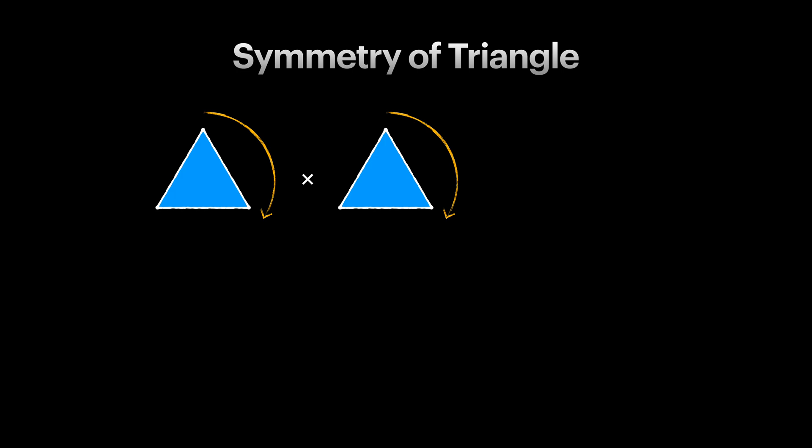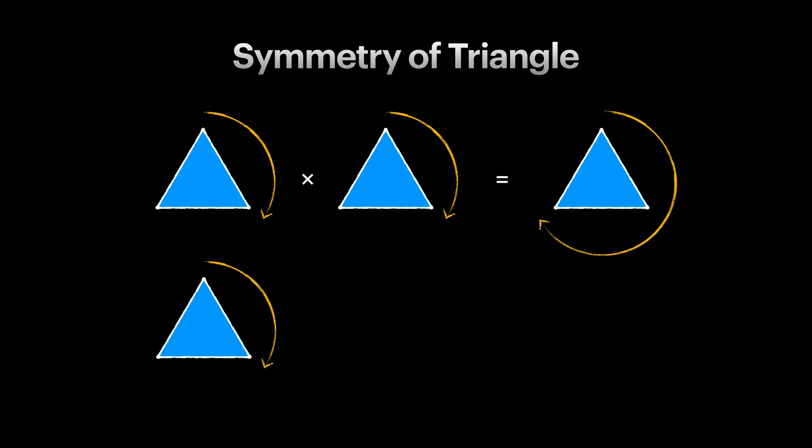For example, by composing 120 degrees rotation twice, we'll effectively get a 240 degrees rotation. What if we first rotate 120 degrees and then flip the triangle from the middle? In that case, if you think about it, it's like we flipped the triangle from the right.